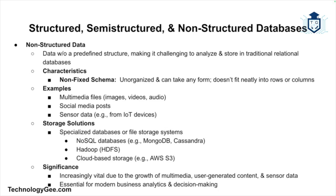Non-structured data doesn't have any predefined structure and is more challenging to analyze and store in a traditional relational database. Non-structured databases have no fixed schemas — the data is unorganized and can take any form, not fitting neatly into rows or columns. Examples include multimedia files like images, video, and audio, social media posts, and sensor data. Non-structured data is typically stored in specialized databases or file storage systems like NoSQL databases, Hadoop, or cloud-based systems like Amazon S3.